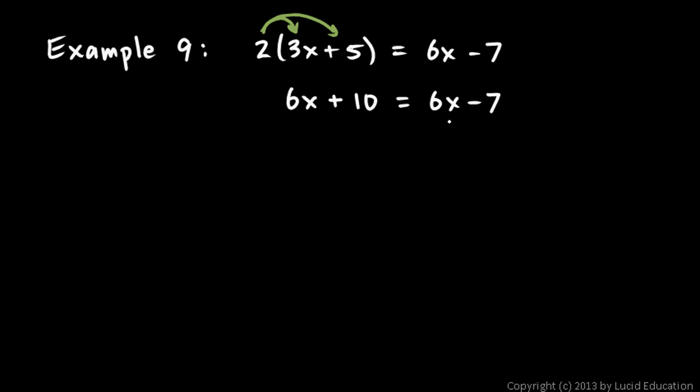Now, I need to get rid of one of these x's because I'm trying to solve for x. I need to get a single x isolated. So watch this though. If I subtract 6x on the left and on the right, both sides, well this 6x and this minus 6x cancels out. And the same thing happens on the right.